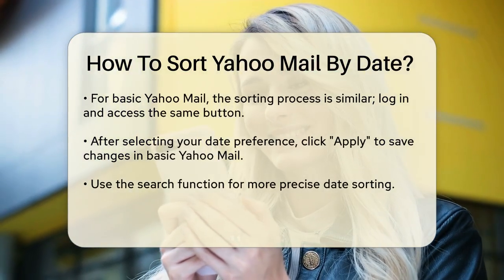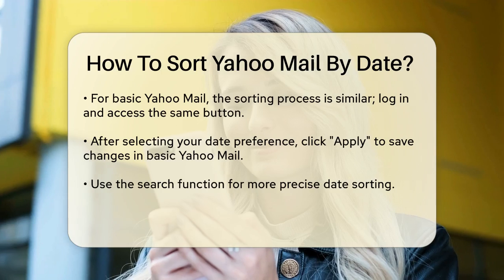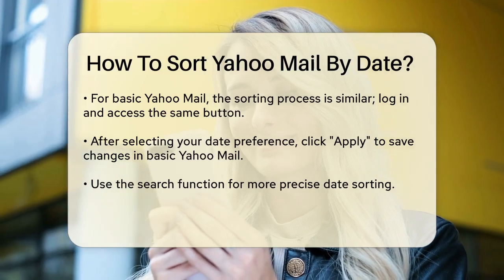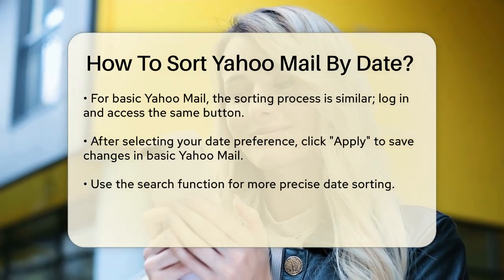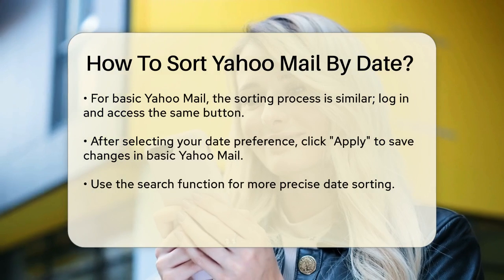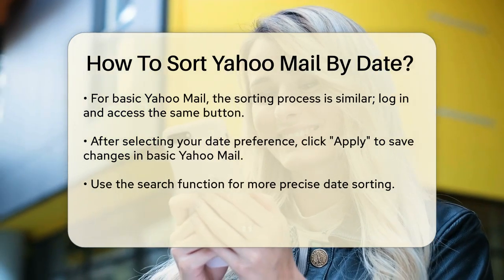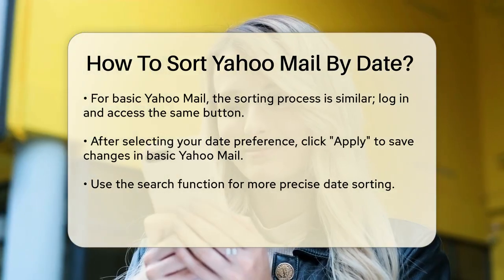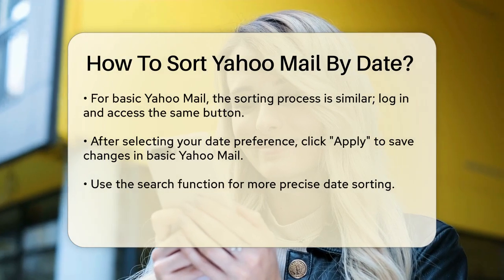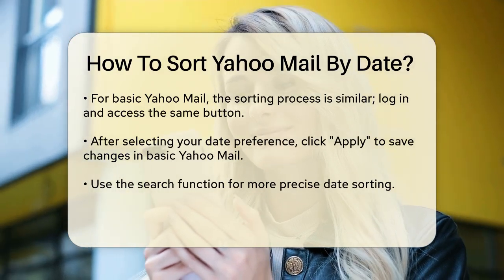If you're using the basic version of Yahoo Mail, the process is similar. Log into your mailbox, go to your inbox, and click the Date Newest on Top button. Select Date Oldest on Top or Date Newest on Top from the drop-down menu, and then click Apply to save your changes.